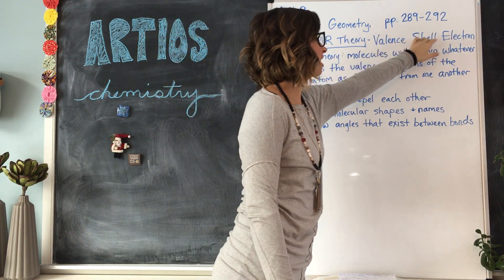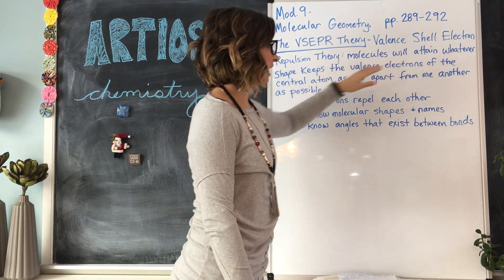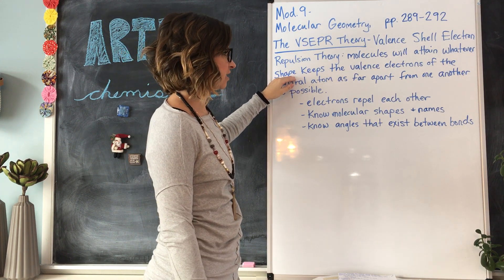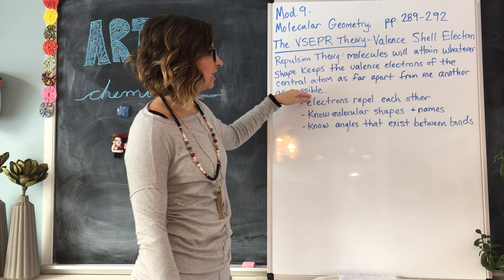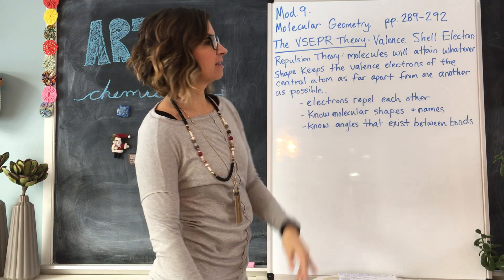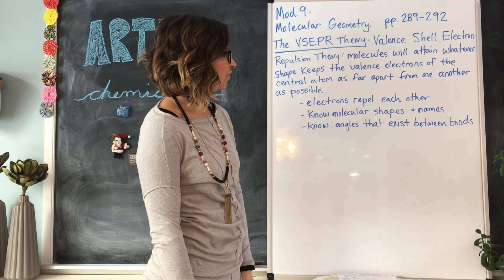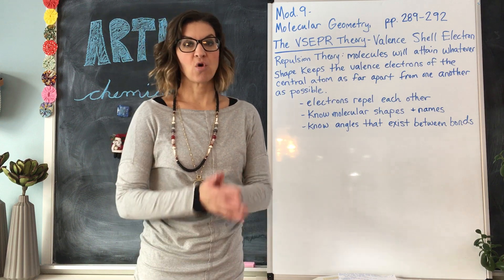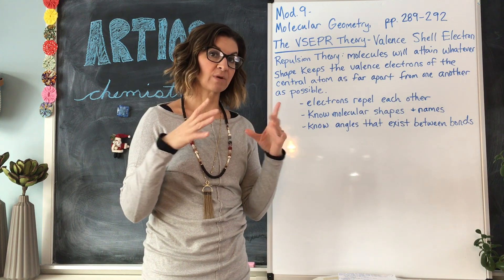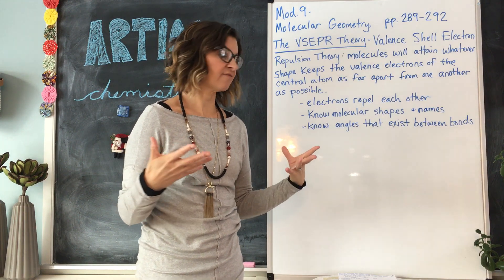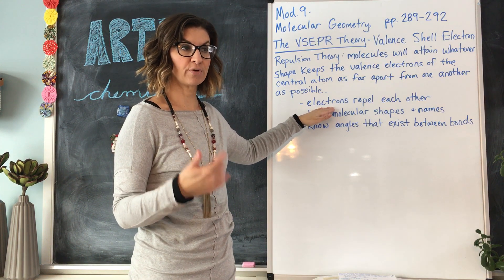VSEPR stands for Valence Shell Electron Repulsion theory. This theory states that molecules will attain whatever shape keeps the valence electrons of the central atom as far apart from one another as possible. You look at the central atom and its valence electrons — electrons repel each other because they all have a negative charge.